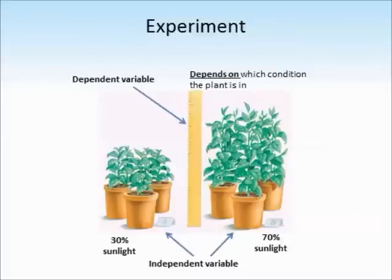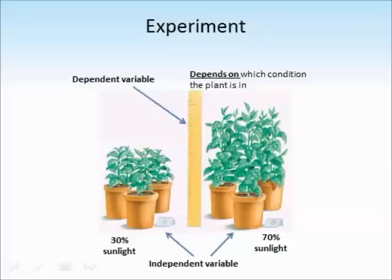To illustrate IVs and DVs, here's an example you might remember from school science lessons. In this experiment, we want to measure the effects of sunlight on plant growth. We can set up two experimental conditions: one with 30% sunlight and one with 70% sunlight. This is the independent variable because this is what's changing between those two conditions. What we're measuring is how tall the plants grow in each condition — plants in the 30% condition won't grow as tall as plants in the 70% condition. The dependent variable depends on which condition the plant is in.